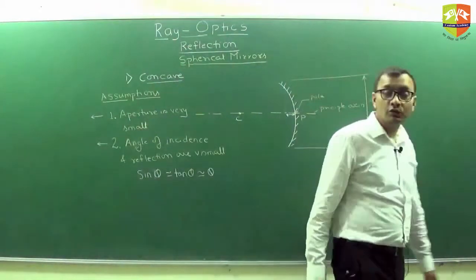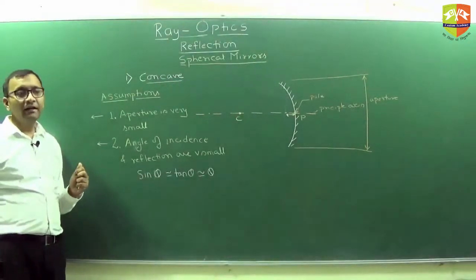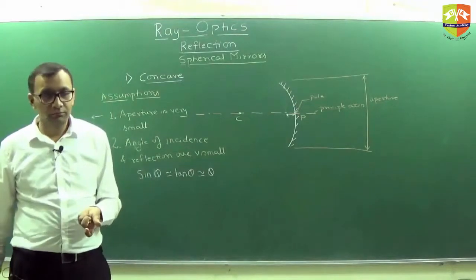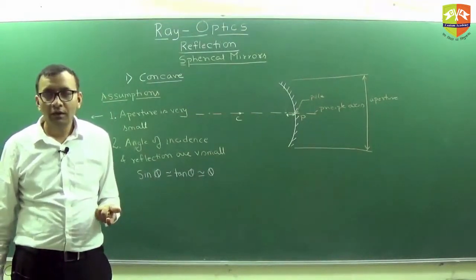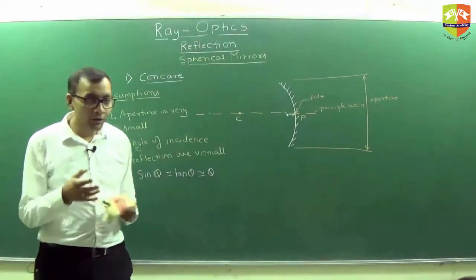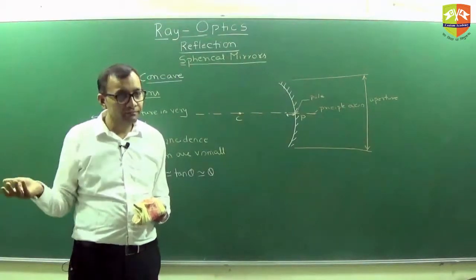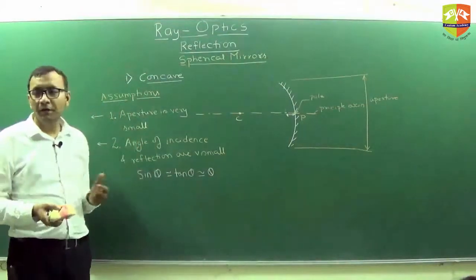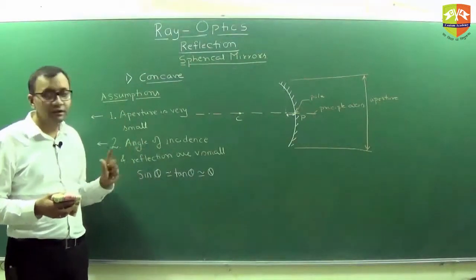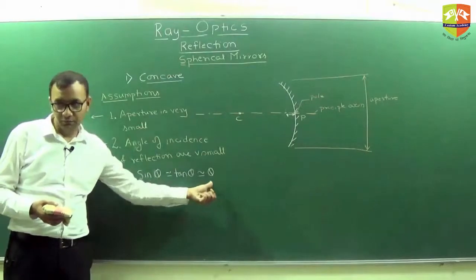We are going to use this approximation extensively throughout the chapter. At times it is written that the observer is looking at the mirror very close to normal — that means angles are small. If the observer is looking very close to normal, all rays with larger angles will not be captured. So automatically these approximations hold. Even if it is not written, we will consider these to be true. This chapter is full of approximations, and this one is very common.